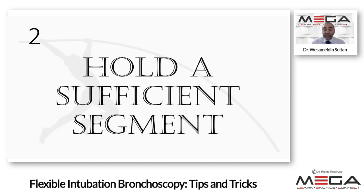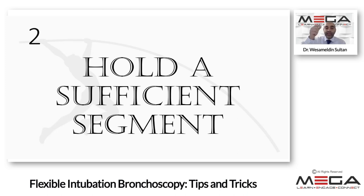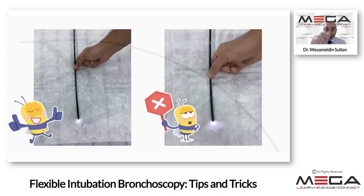Number two: hold a sufficient segment that allows you to introduce the tip of the bronchoscope all the way into the trachea. You can measure it over your patient from the mouth cavity to below the thyroid cartilage. Hold enough to keep the bronchoscope straight throughout, without needing to reposition your hand, as that will affect your direction while targeting the trachea.